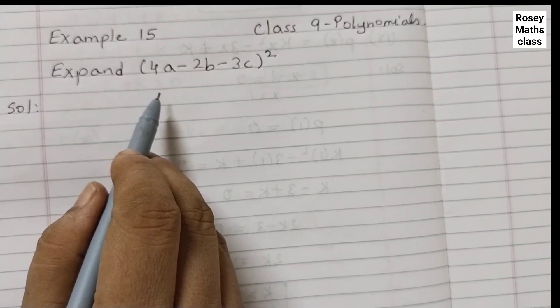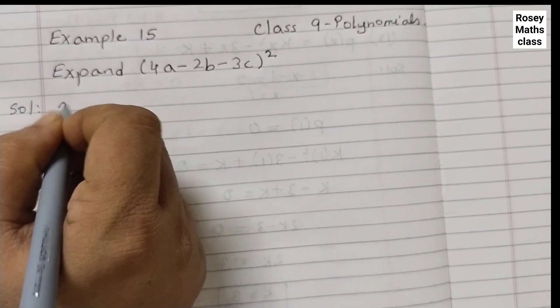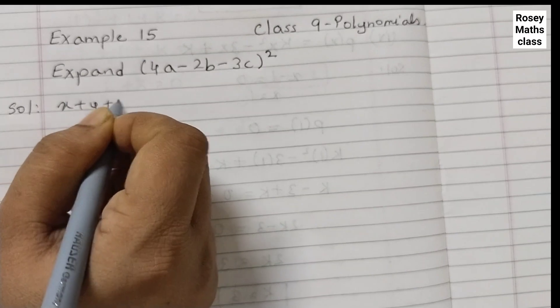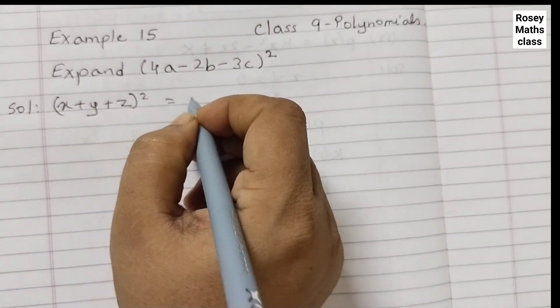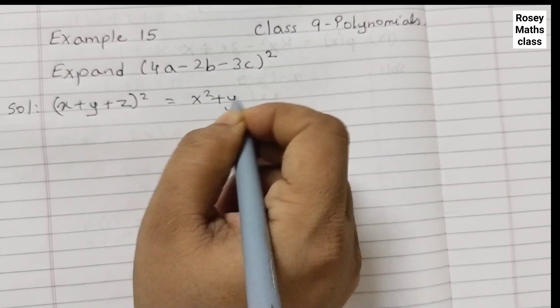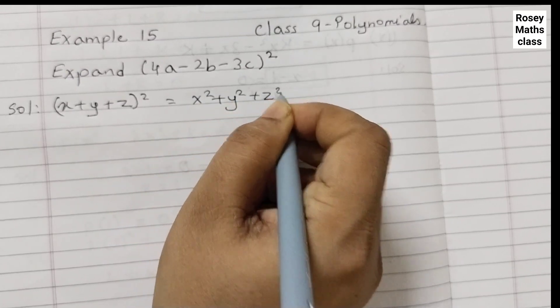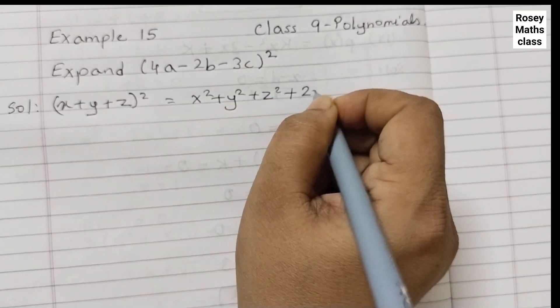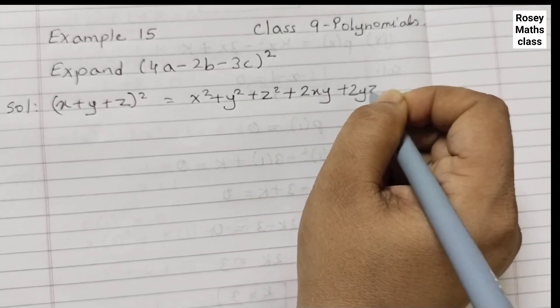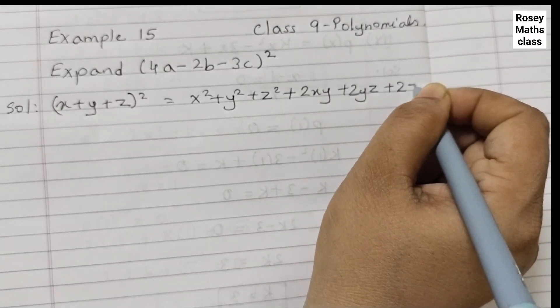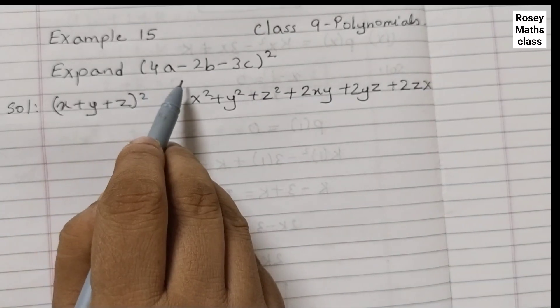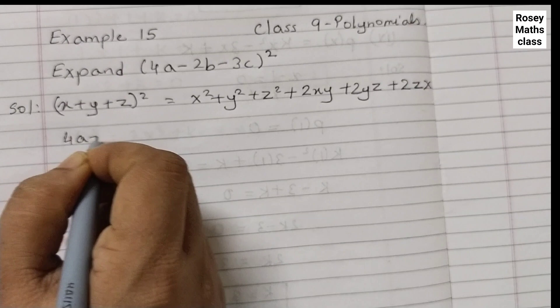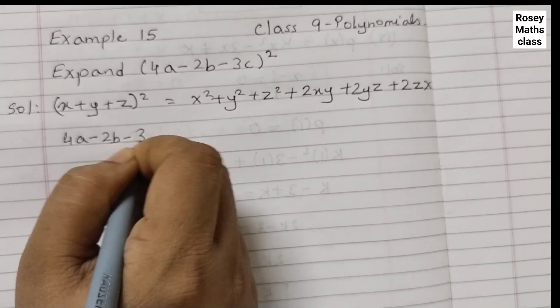To expand this we will use the identity x plus y plus z the whole squared is equal to x squared plus y squared plus z squared plus 2xy plus 2yz plus 2zx. Using this identity we are going to expand this 4a minus 2b minus 3c.